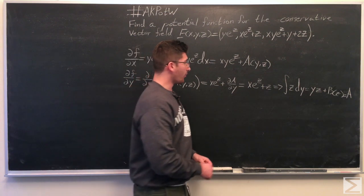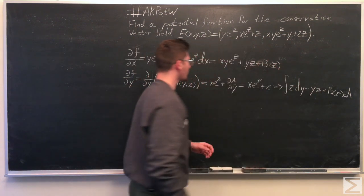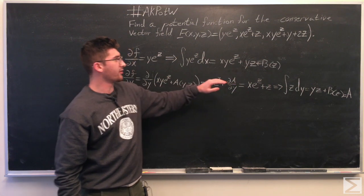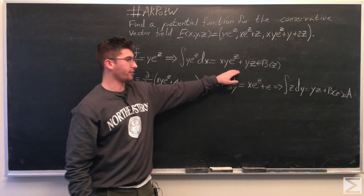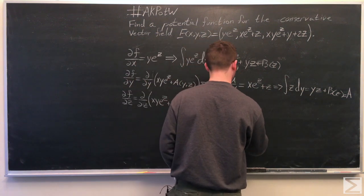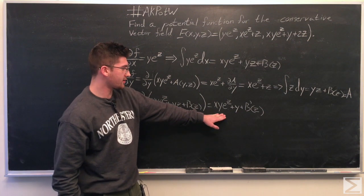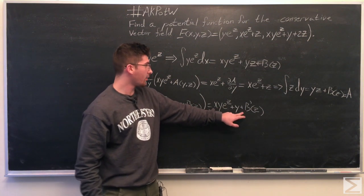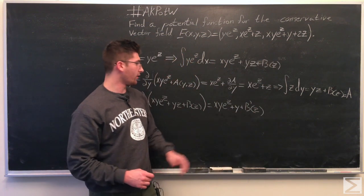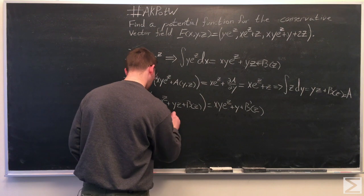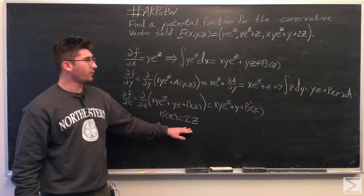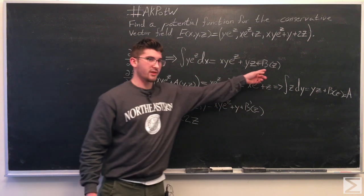This is our new potential function f after substitution. We're going to do the same thing by taking the partial derivative of f with respect to z and setting it equal to the z-component. That gives us x·y·e^z plus y plus b′(z), and we know this should equal the z-component. From that, we determine that b′(z) is equal to 2z, so we take the integral of 2z with respect to z to find b(z).